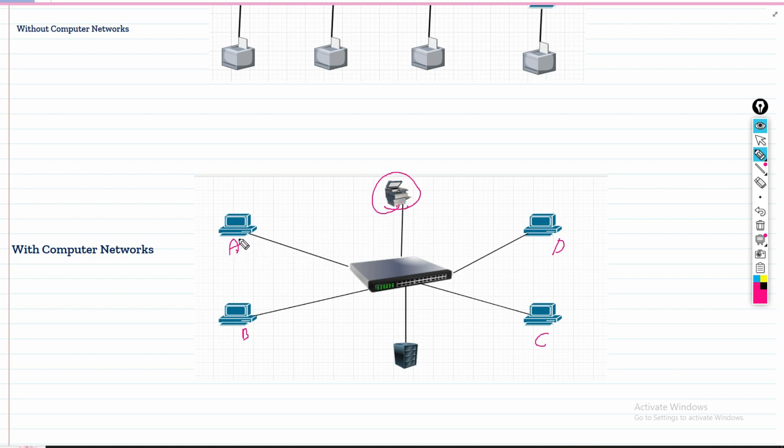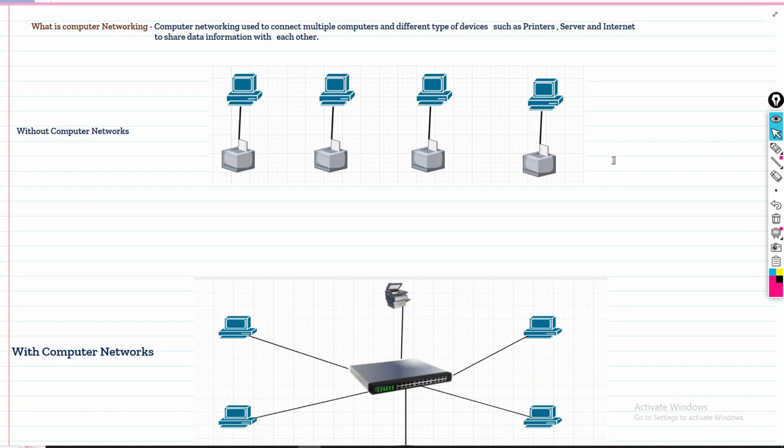This PC can print data here, this PC can send data to C, this PC can send data to D because it's centrally connected. Suppose this is a storage server - all PCs can save data here and each one can access data from here, from the centralized server. This is the benefit of a computer network.